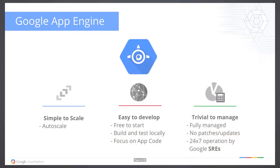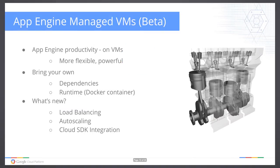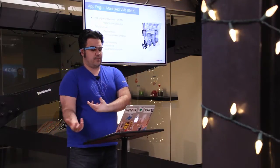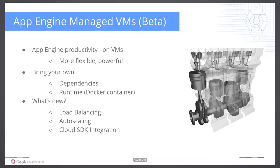App Engine is simple to scale, easy to develop, trivial to manage — it's fully managed, you don't have to worry about the stack. The problem a lot of people ran into was you had to think the App Engine way: a very minimal runtime you had to use, you couldn't bring your own packages. Now in beta is App Engine managed VMs, which gives you the flexibility of App Engine on top of VMs, letting you bring your own dependencies and runtime via Docker containers.